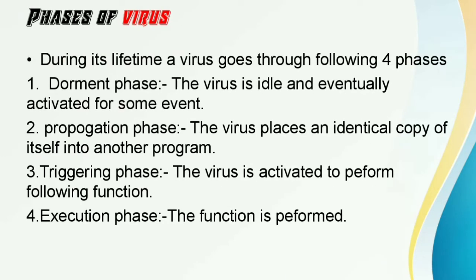Phases of virus: during its lifetime, a virus goes through mainly four phases. 1. Dormant phase: the virus is idle and eventually activated for some time. 2. Propagation phase: the virus places an identical copy of itself into other programs. 3. Triggering phase: the virus is activated to perform a function. 4. Execution phase: when the function is performed.